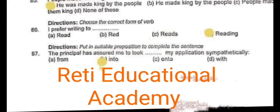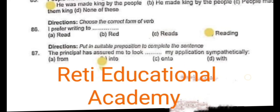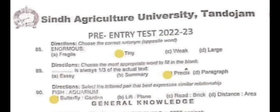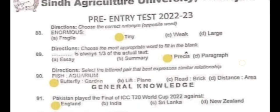Question 87 – Put in suitable prepositions: 'The principal has assured me to look __ my application sympathetically.' The correct answer is 'into'. Question 88 – Choose the correct antonym for 'enormous'. The correct answer is 'tiny'. Question 89 – Choose the most appropriate word to fill in the blank: A précis is always one third of the actual text. The correct answer is 'precise'. Question 90 – Select the lettered pair that best expresses a similar relationship: Fish : Aquarium. The correct answer is A – Butterfly : Garden.